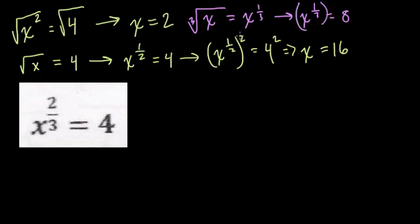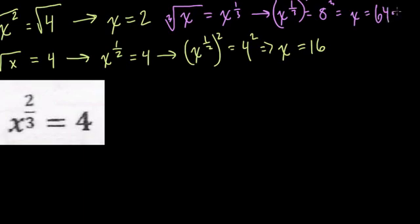In that case, how do I undo the 1 third power? The same way I undo the half power. For the half power, I raised to the second power to undo it. So you can imagine for the third power, I would raise that to the third and balance it on both sides.